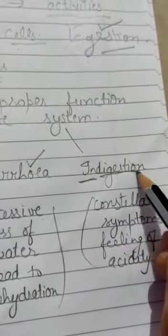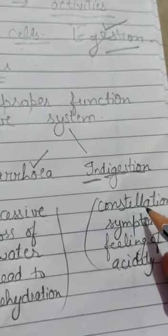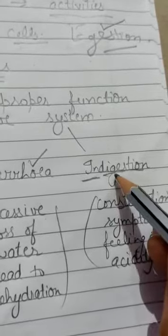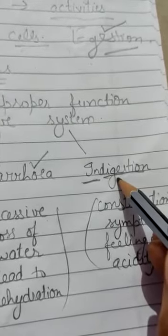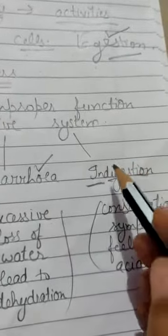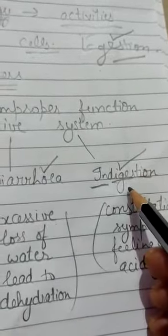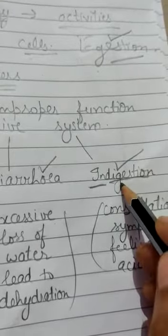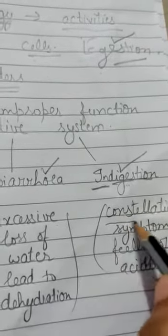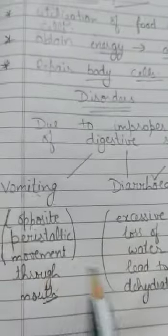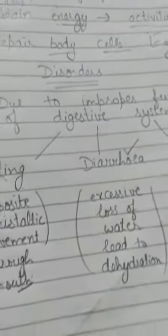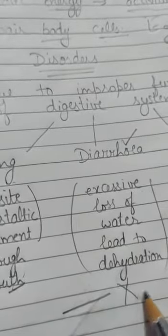The third disorder is indigestion. Indigestion means food is not properly digested — there are constipation symptoms in our body. Whenever we feel problems like gas or acidity, that is indigestion — the food is not properly digested in our digestive system and we face constipation problems. These are the three main disorders of our digestive system. Thanks a lot.